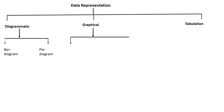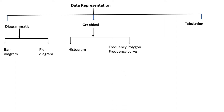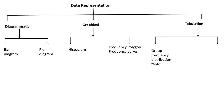In the graphical method, you can do it in two ways. One is group frequency distribution table and the other one is ungroup frequency distribution table, which we are going to learn in this chapter.